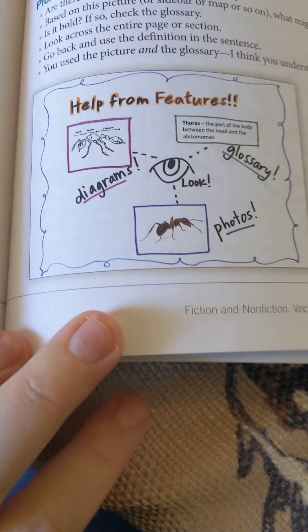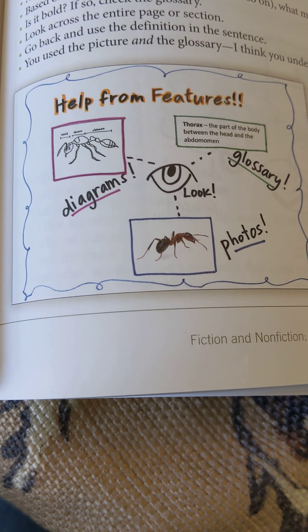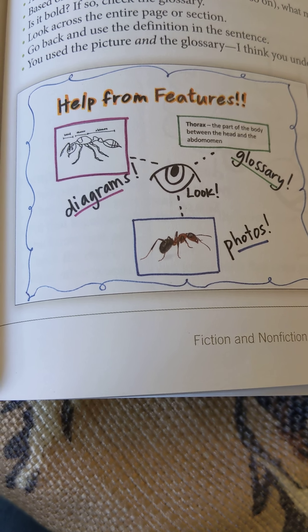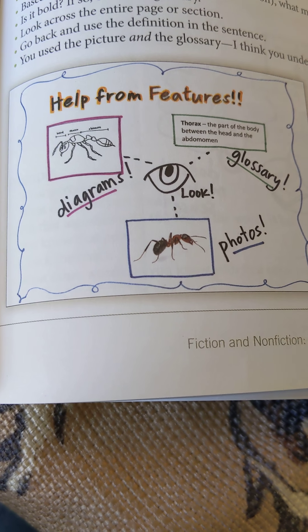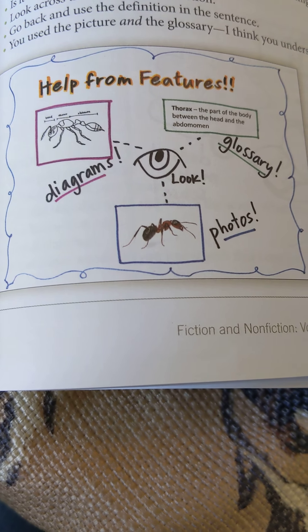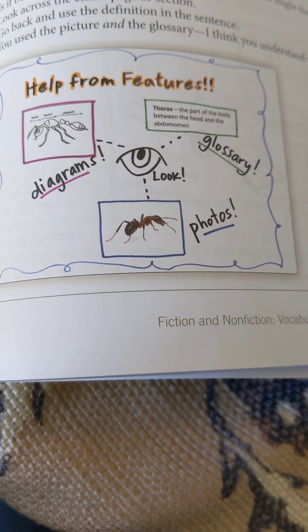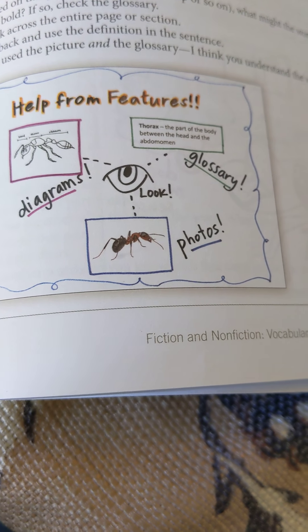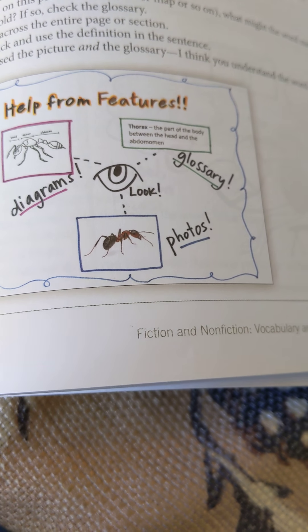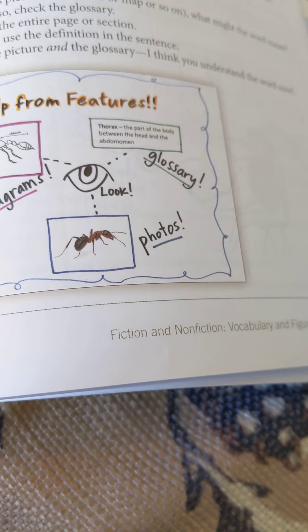The other strategy we're going to look at is using text features. This is going to apply to nonfiction or informational text. If you'll look at my anchor chart — get help from the features of the text. I noticed a lot of you, when we were taking our FMP reassessments in February and March, if you were reading an informational text, you were pausing and looking at the captions that went with photographs and diagrams and all that.